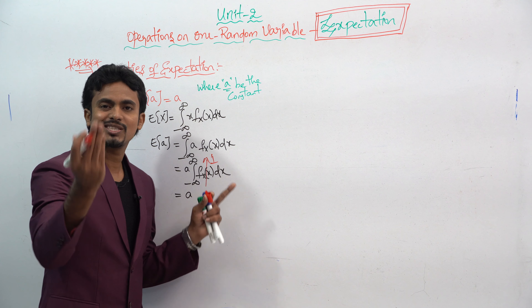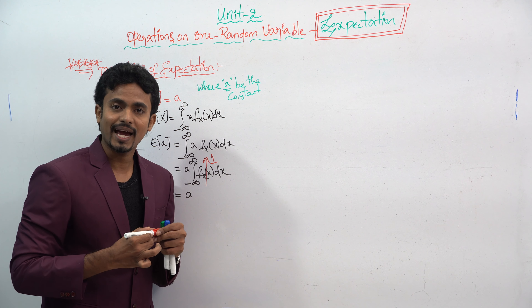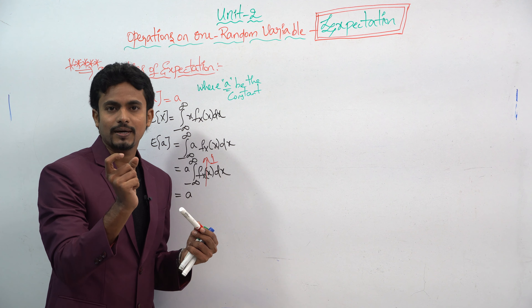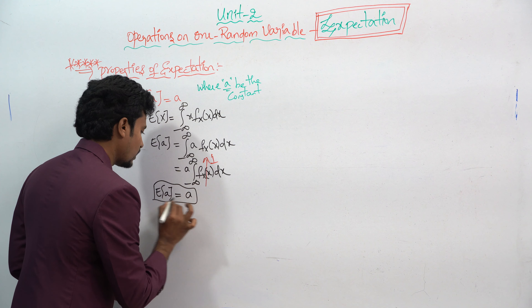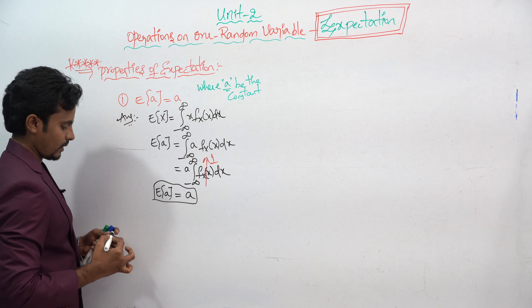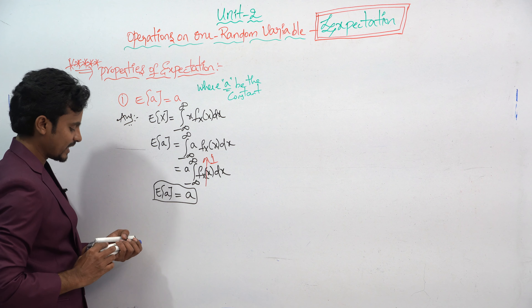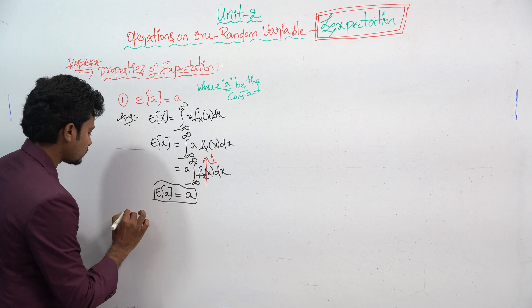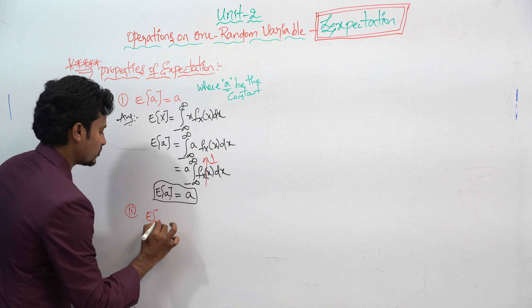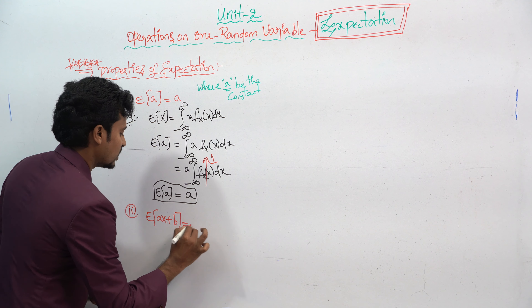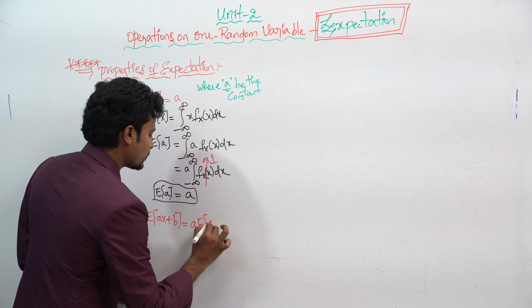You already know this is the density function — whenever we find the area under the density function, that equals 1. So the integral of f(x) dx from minus infinity to infinity equals 1. Therefore, this becomes a times 1, which equals a. So E(a) = a. We have proved this first property.